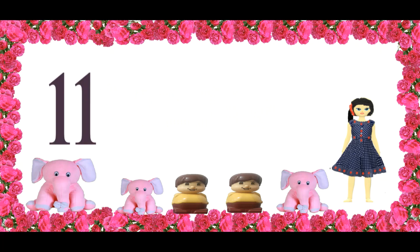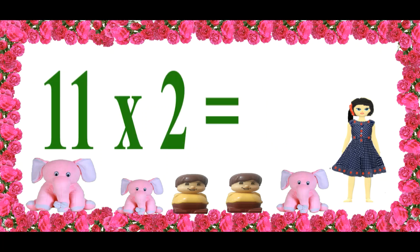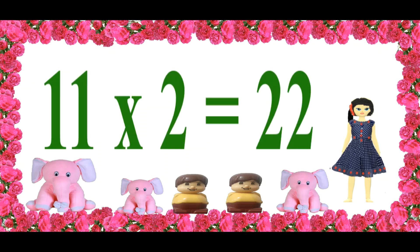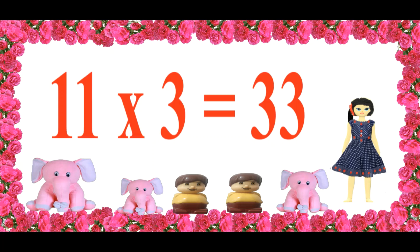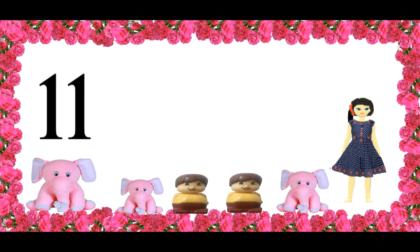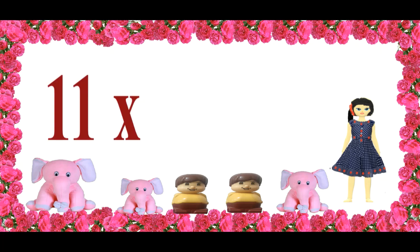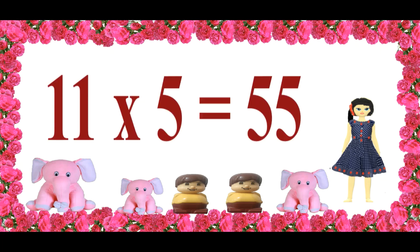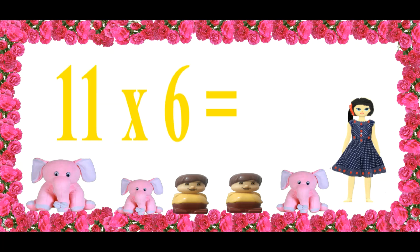Eleven ones are eleven. Eleven twos are twenty-two. Eleven threes are thirty-three. Eleven fours are forty-four. Eleven fives are fifty-five. Eleven sixes are sixty-six.